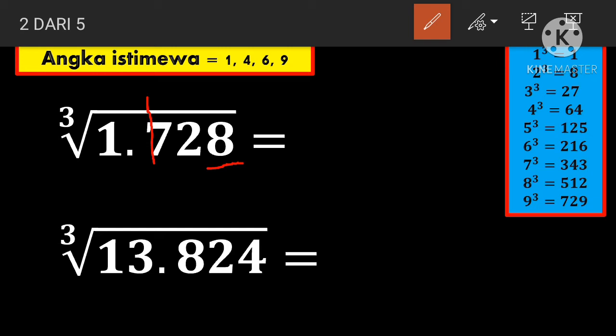Obviously, 8 plus 2 equals 10, so the last digit is 2. Next, for the front number in the thousands, we look here—which one is closest? Clearly 1³, so the result is 12. How about that? Very easy, right?